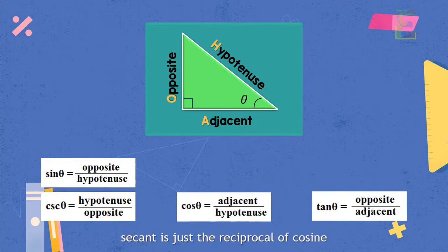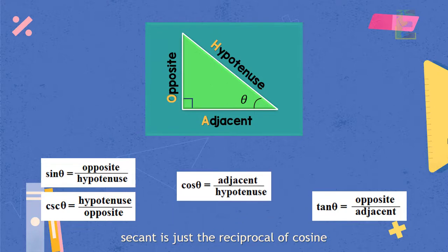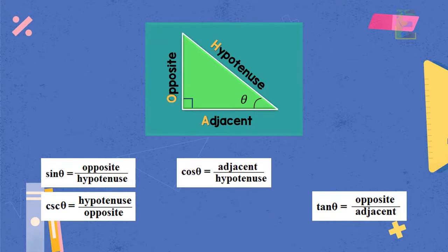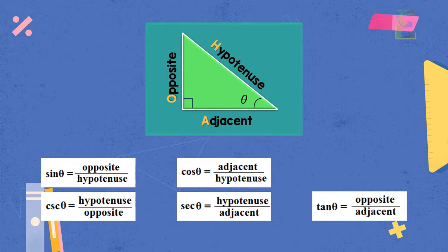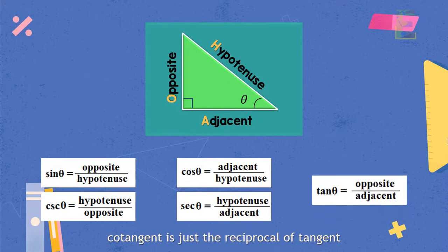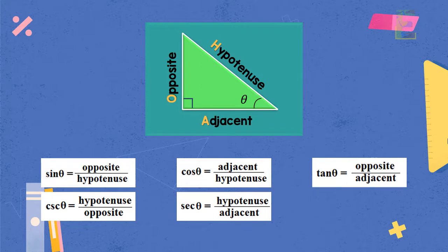Secant is just the reciprocal of cosine. Therefore, secant is equal to hypotenuse over adjacent. And for the cotangent, it is just the reciprocal of tangent. So cotangent is adjacent over opposite.